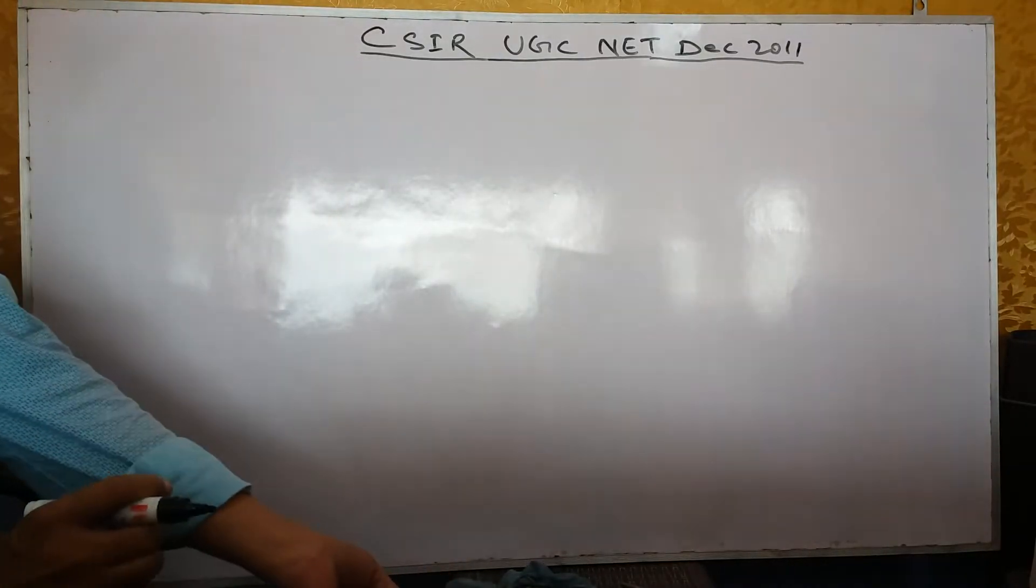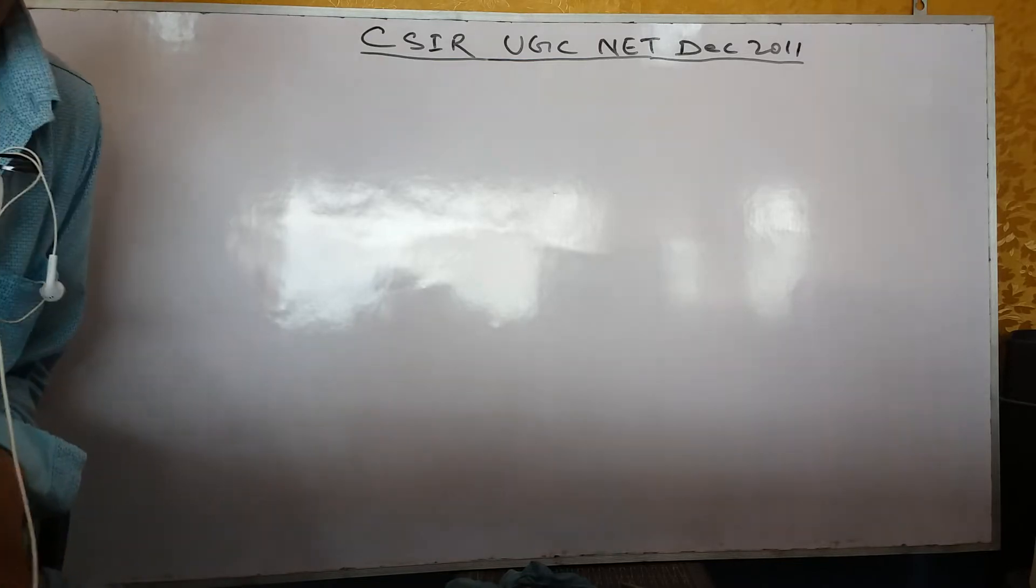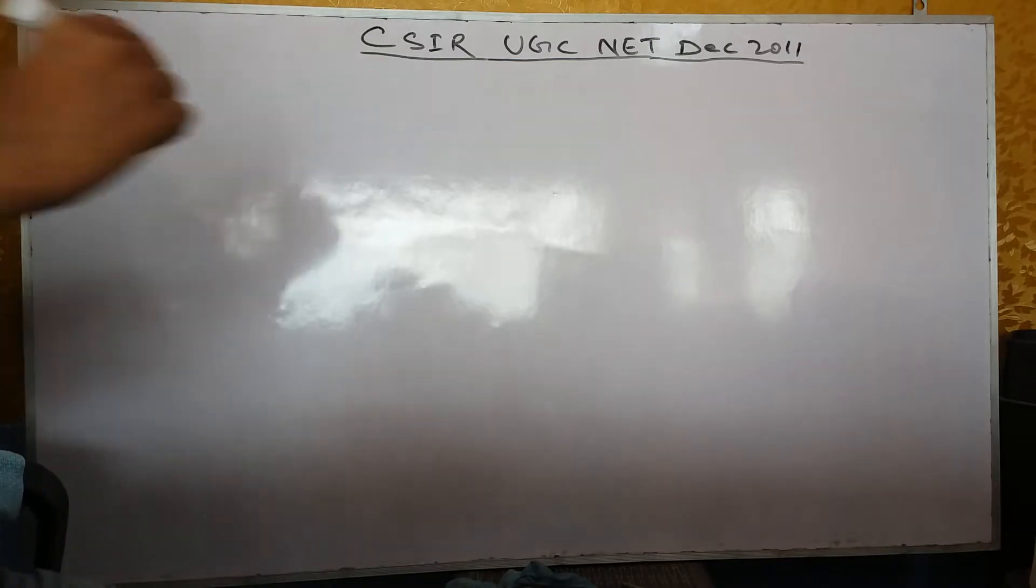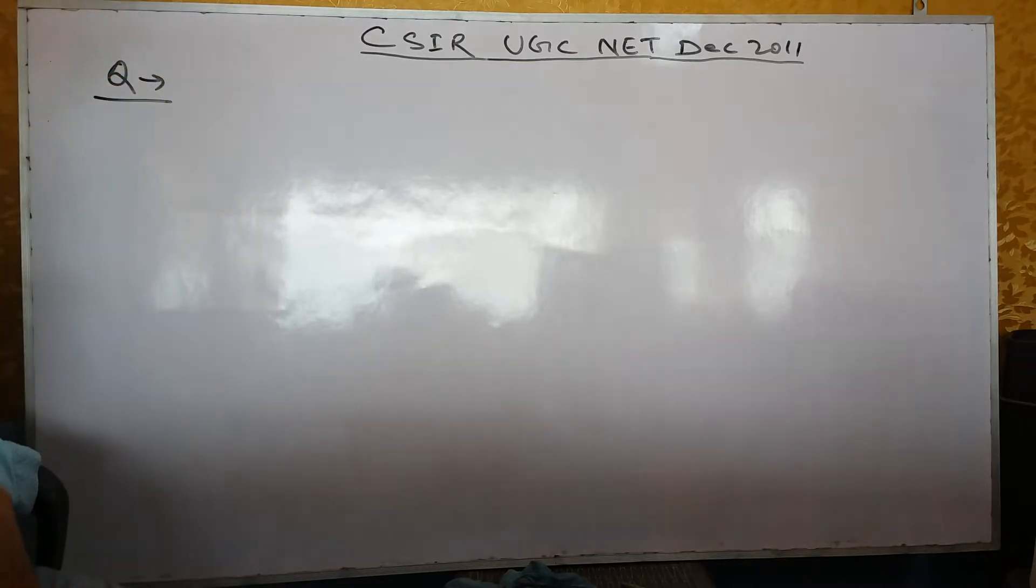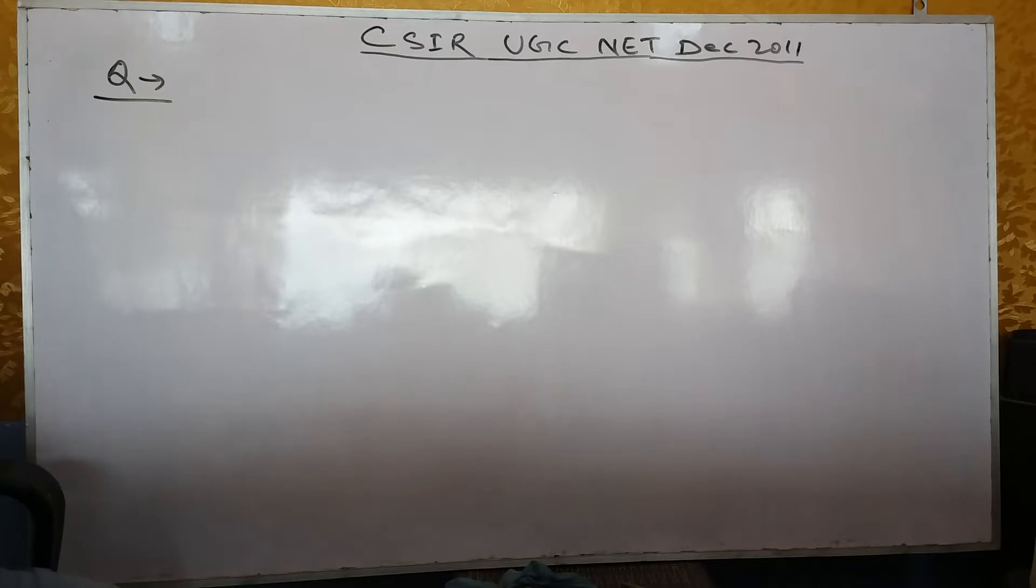CSIR UGC NET December 2011 Question. The question is: The rate constant of a unimolecular reaction.